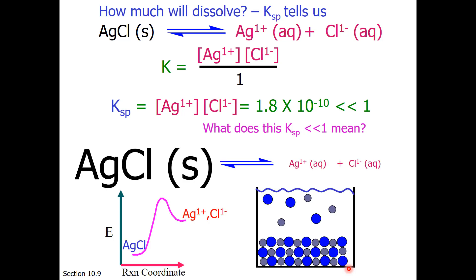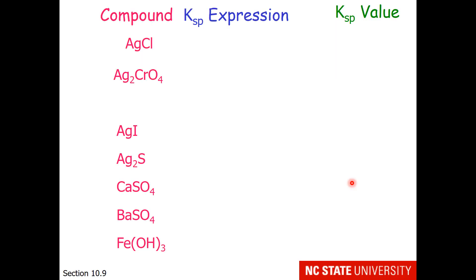It means we're dealing with a non-extensive reaction. If you take a great deal of silver chloride and place it in water, you'll find that most of the silver chloride remains at the bottom, and only a few silver and chloride ions dissolve in the water.